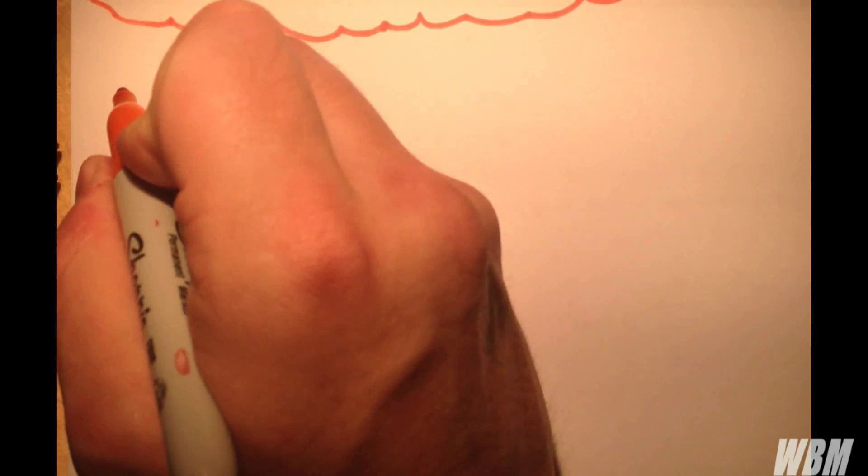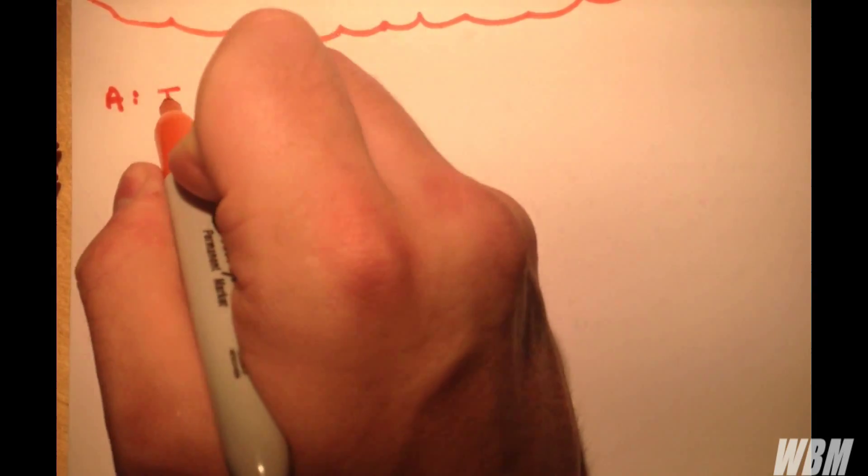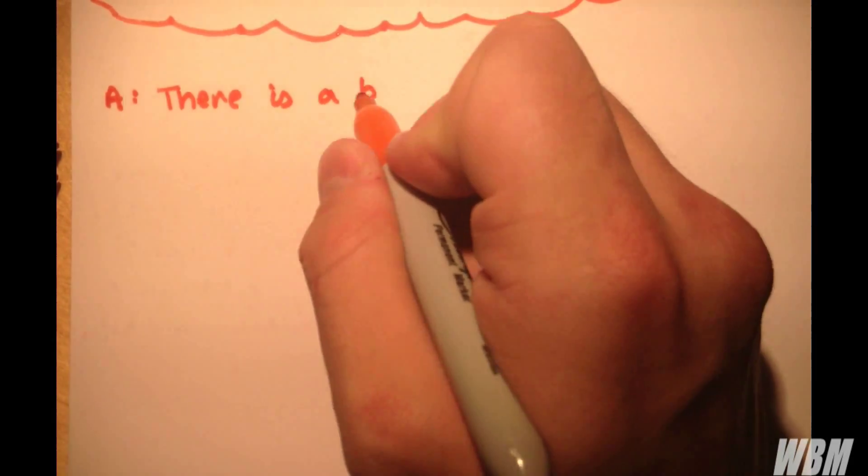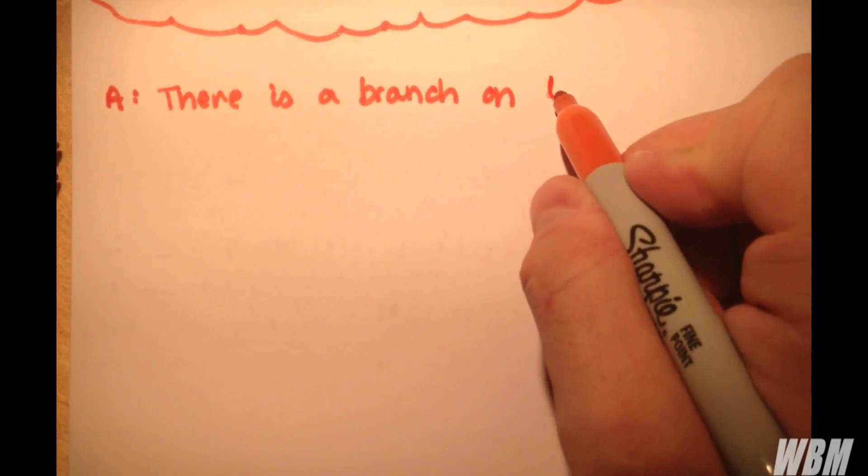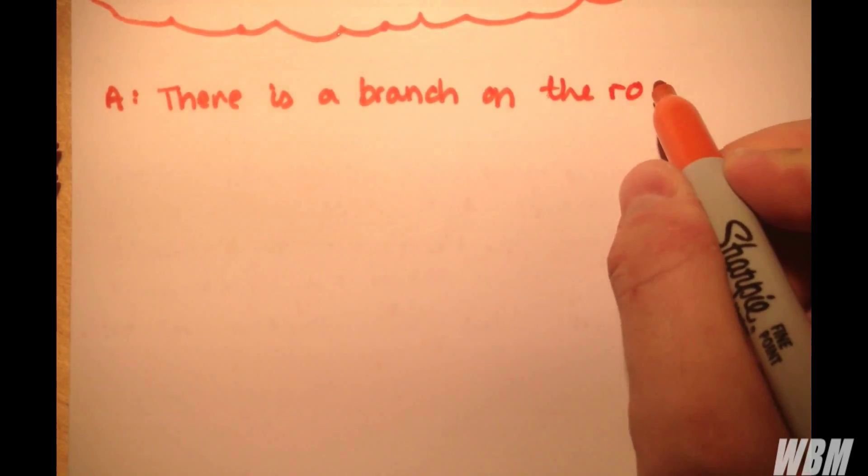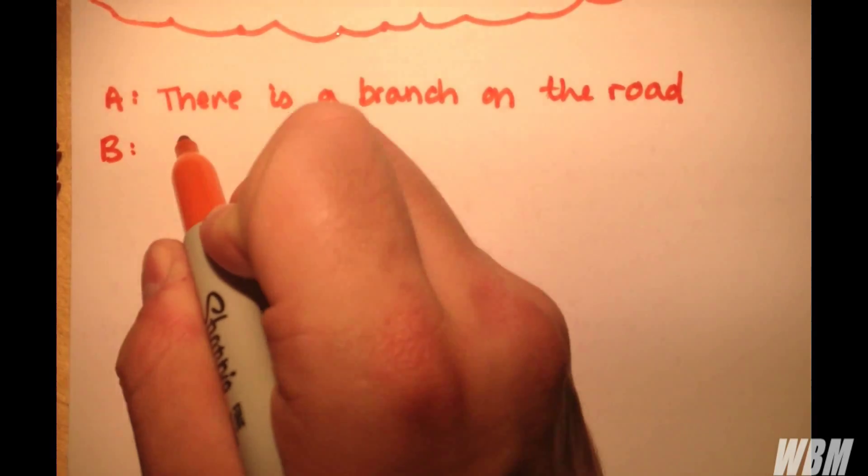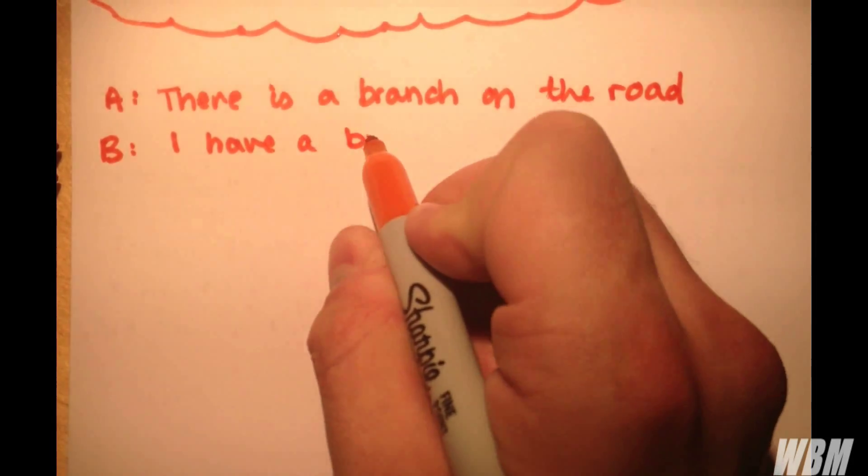So straight away, let's work with an example. We consider the events A and B. A: there is a branch on the road. B: I have a bicycle accident.